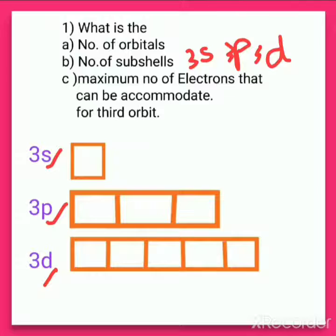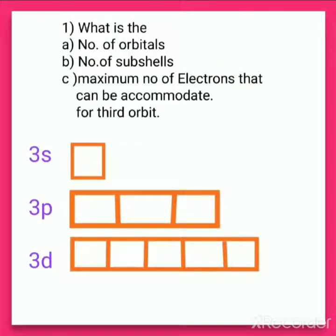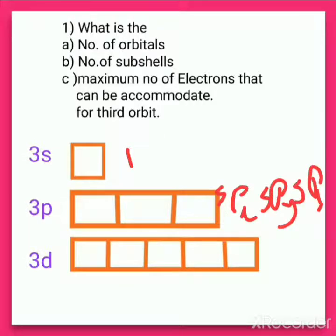Now we need to find out the number of orbitals. You can find orbitals by counting the number of boxes. In the case of s, there is only one orientation, so we make one box — there is only one orbital. For 3p, we make three boxes, giving three orbitals: 3px, 3py, and 3pz. For 3d, there are five orbitals.